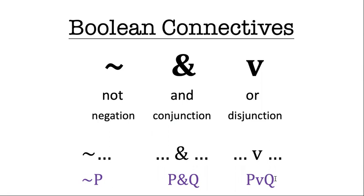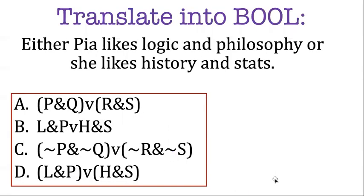Okay, let me give you a job to see if you can start using these things. Here's a sentence in English. Either Pia likes logic and philosophy or she likes history and stats. What I want you to do is try to figure out how to translate this sentence. I've given you some options here, so just pick A, B, C, or D. Pause your videos now and think about each of these answers.